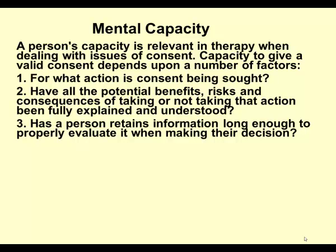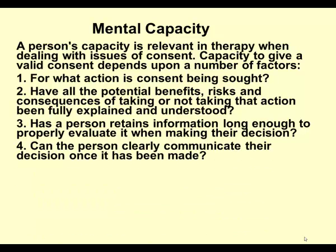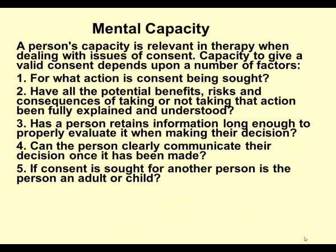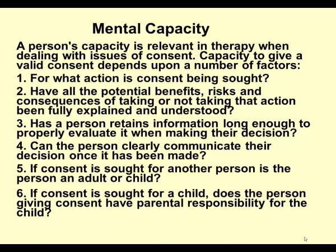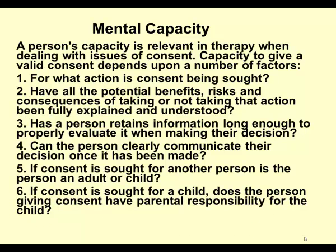Has a person retained the information long enough to evaluate and make the decision? Can they communicate it once it's been made? If consent is sought by another person, is the person an adult or a child? If consent is sought for another person, you are seeking consent on behalf of somebody else — and you can't give consent for another adult unless you are in a parental role, or are a carer or guardian. You can for a child. With an interpreter, you're not seeking consent, you're merely interpreting — the client still has capacity and is still giving consent.